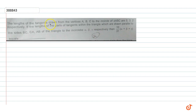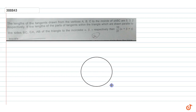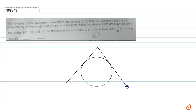So if we look at the question, first of all we have a circle — this incircle of triangle ABC. This is side AB. This point is A, this point is B, this point is C.